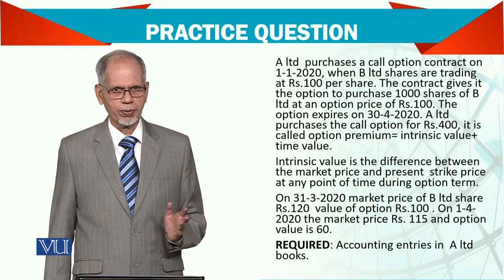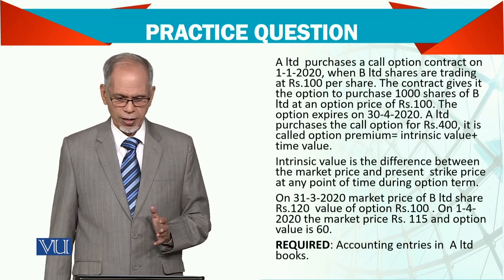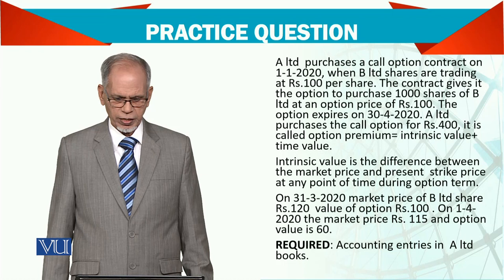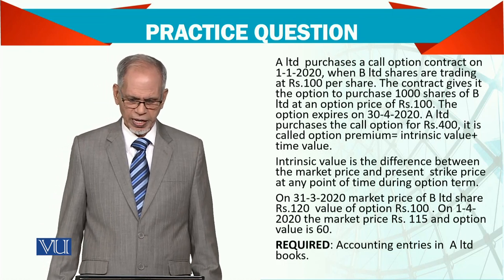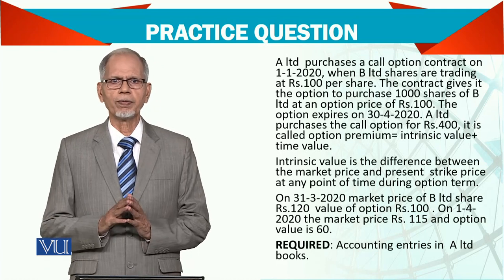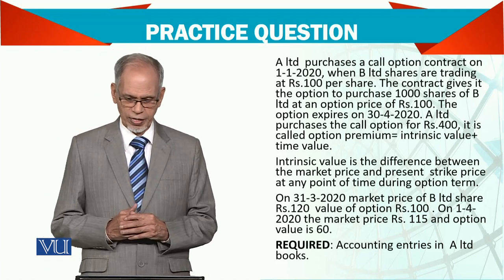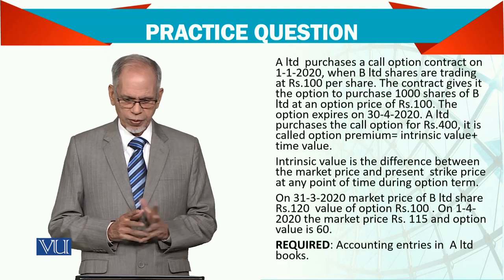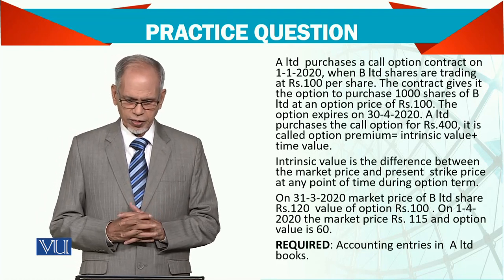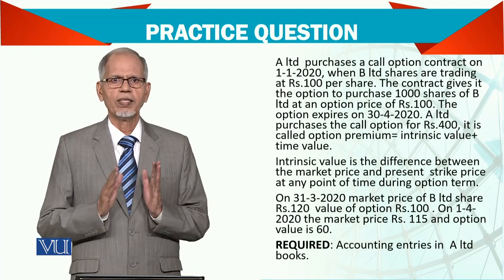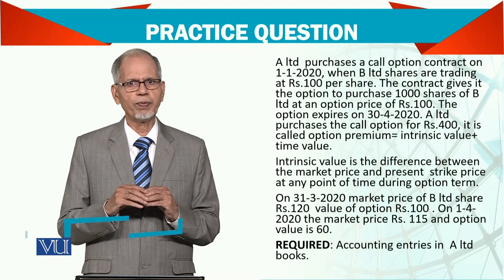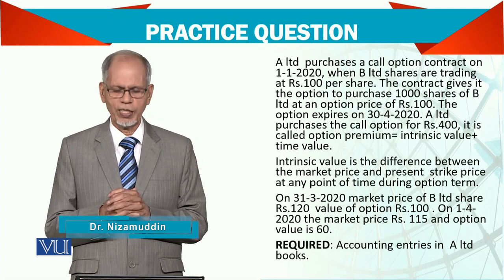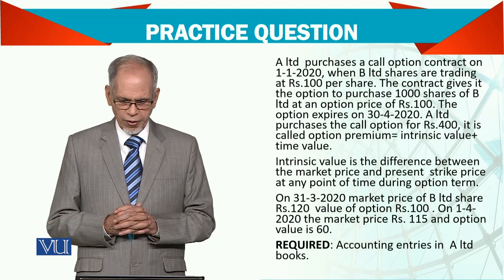A has a call option. As individuals do this, companies do this too. So there is a price in the market. The contract gives it the option to purchase 1000 shares of B Limited at an option price of 100. The option expires on 30th April — 4 months. A Limited purchased the call option for Rs. 400. They have bought a call option — not a share. They bought it upfront and paid Rs. 400. This is the investment of Rs. 400.